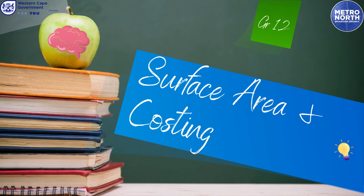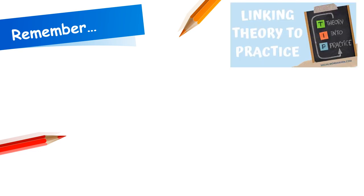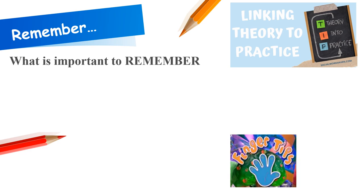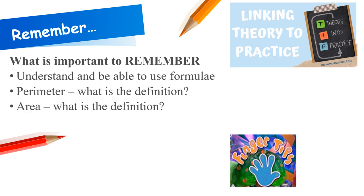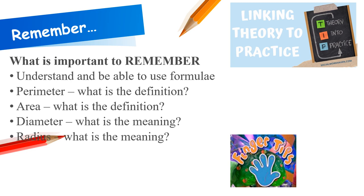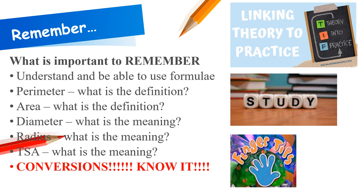Now let's look at area with costing. Remember: theory and practice are linked, so you need both. Key things to know at your fingertips: understand and be able to use formulas for perimeter, area, diameter, radius, and total surface area. Also know your conversions. The only way to remember these is to study them.